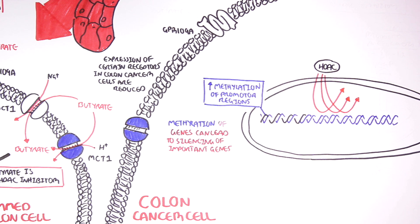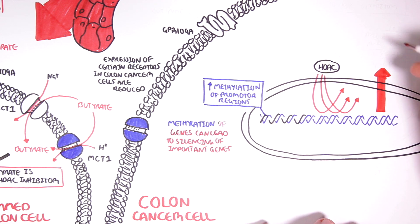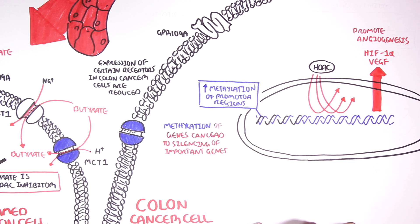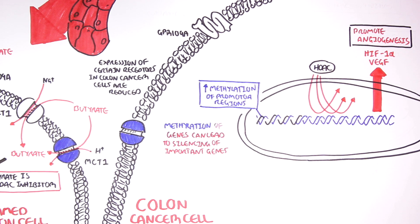Histone deacetylases may also be more active in colon cancer cells. Colon cancer cells proliferate rapidly, and at the same time these cells require more and more energy and nutrients. In order to do so, there is an increase in HIF1-alpha and VEGF, which are angiogenic factors that promote angiogenesis — the formation and maturation of blood vessels.